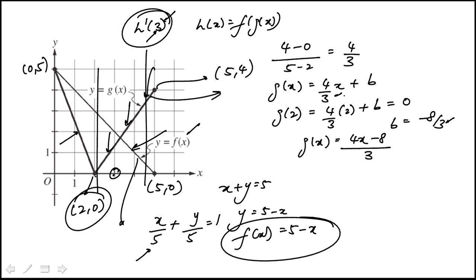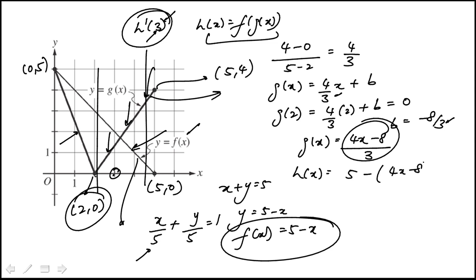They have the same denominator. Now I need to find the composite function h of x, which is f of g of x. Substituting g into f gives 5 minus (4x minus 8) over 3. You can do the complete computation — and you'll see why you don't have to — that simplifies to (23 minus 4x) over 3.